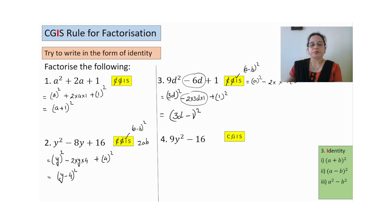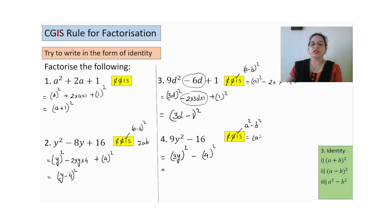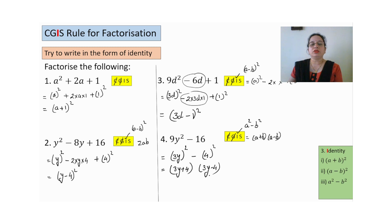Fourth one — common not there, grouping not there. Only two terms and the middle sign is minus, so we use a²-b². Can we write the first term as (3y)²? Yes. Can we write 16 as 4²? Yes. The identity a²-b² gives us one bracket where we add and one where we subtract. So this is the answer.